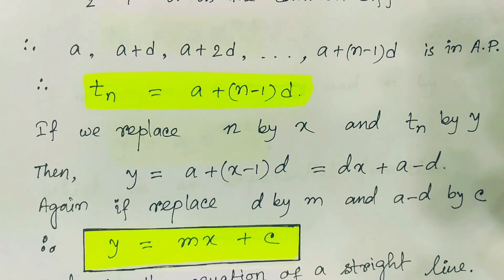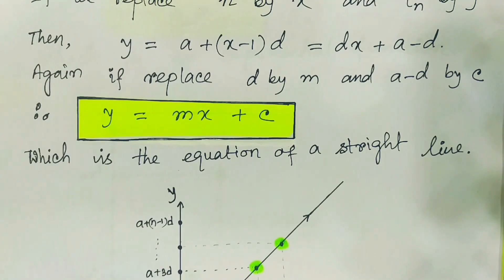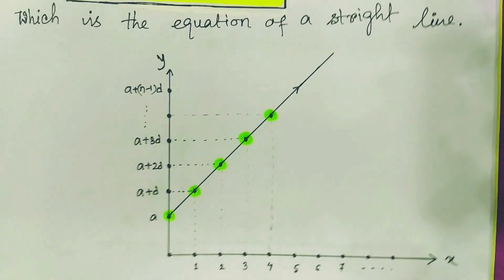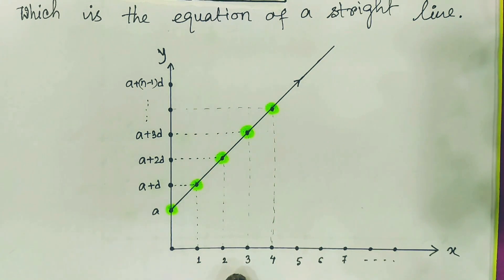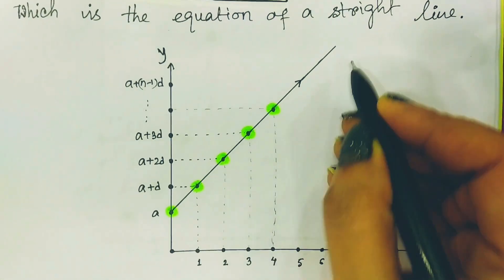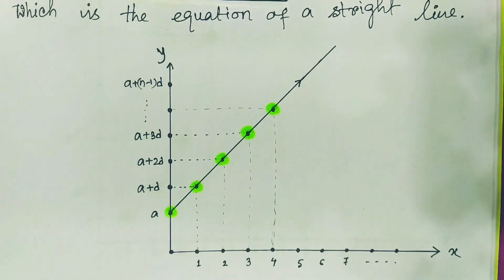Yes, this is the linear equation — the equation of a straight line. So we can say that any arithmetic progression can be expressed by a straight line or a linear representation. If we plot this sequence on a graph paper, with n values on the x-axis and the terms tn on the y-axis, all the points will lie on a straight line.